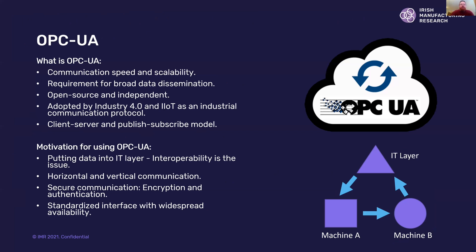A solution to this is OPC UA. In modern times there's more critical analysis needed for communication speed and scalability within a factory. Requirements for data sharing and dissemination of data between layers and between devices is critical. OPC UA is an open-source implementation protocol for industrial communication — it's vendor independent and can communicate with legacy industrial protocol implementations as well as using its own communication stack.